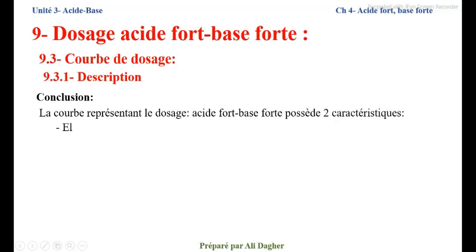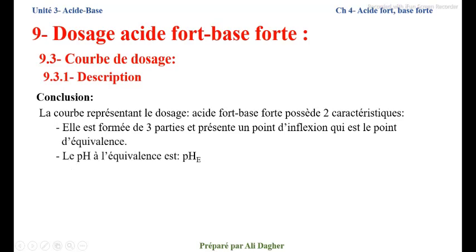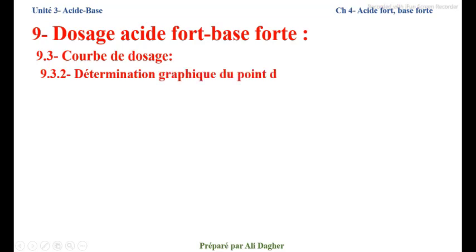Conclusion : la courbe représentant le dosage acide fort-base forte possède deux caractéristiques. Tout d'abord, elle est formée de trois parties et présente un point d'inflexion qui est le point d'équivalence. Deuxième caractéristique : le pH à l'équivalence dans le cas du dosage acide fort-base forte est toujours égal à 7 à 25 degrés.